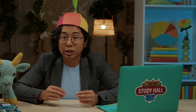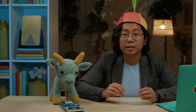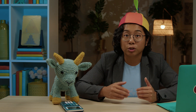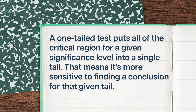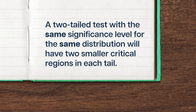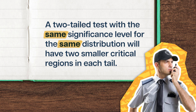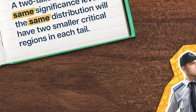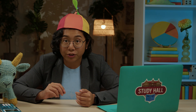Two-tailed tests are appropriate when our alternative hypothesis is only looking to find a difference of any kind between two populations, meaning our critical regions for the test fall across two tails. For both kinds of tests, the significance threshold also determines the size of the critical region, which has implications for how the tests compare. A one-tailed test puts all of the critical region for a given significance level into a single tail, making it more sensitive to finding a conclusion for that given tail — like a bloodhound on the scent knowing what it's after. A two-tailed test with the same significance level will have two smaller critical regions in each tail, kind of like a guard ready for disturbances in any direction but only able to give each direction some of their attention. Ultimately, a one-tailed test is more sensitive than a two-tailed test if there's an effect in the hypothesized direction.